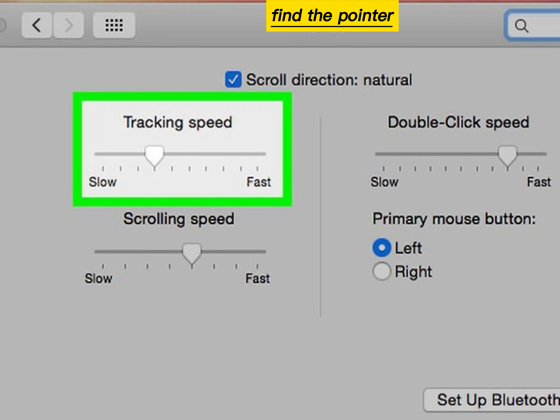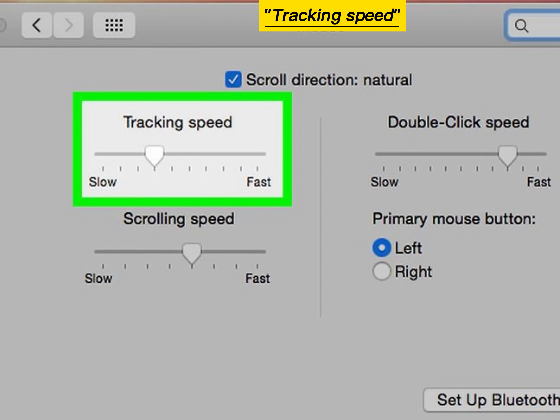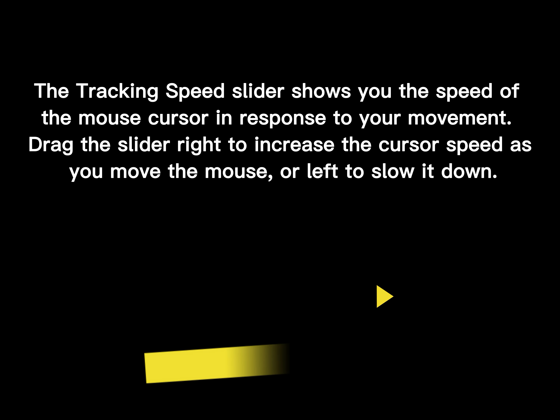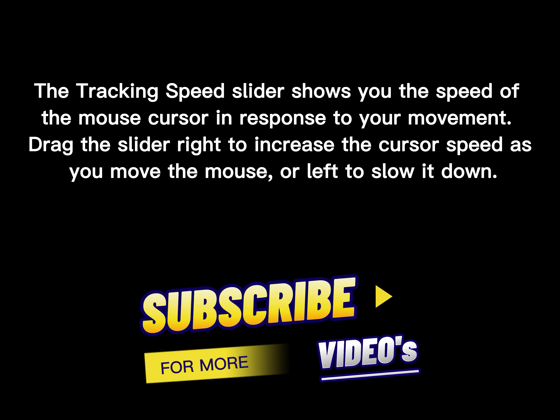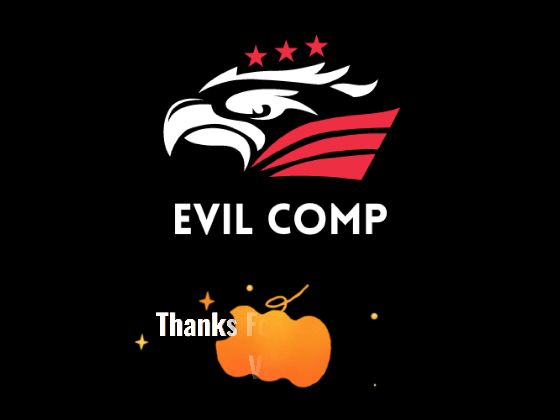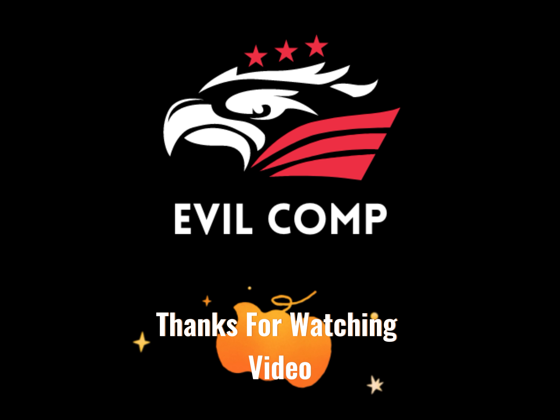Find the Pointer Sensitivity under the Tracking Speed. The Tracking Speed slider shows you the speed of the mouse cursor in response to your movement. Drag the slider right to increase the cursor speed as you move the mouse, or left to slow it down. Thanks for watching.